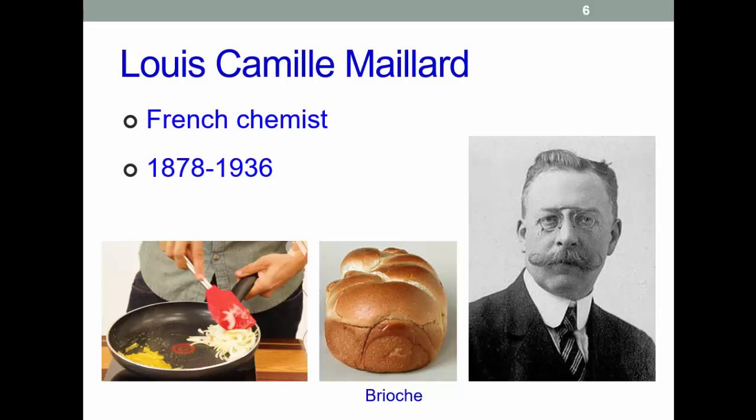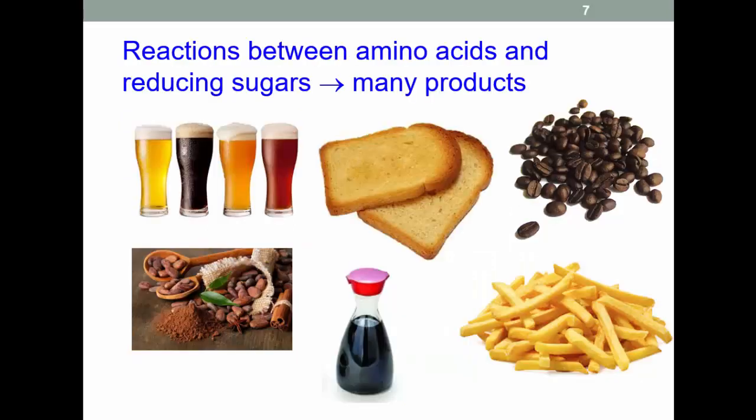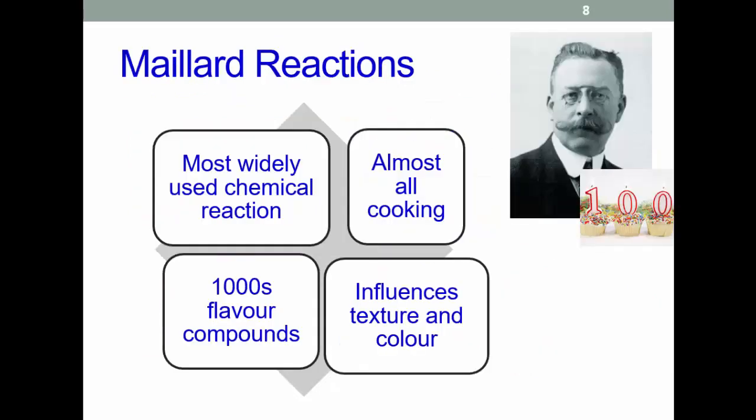You can try the experiment yourself with some onions in a pan and some bicarbonate of soda — sodium hydrogen carbonate. There's a picture of a brioche there in tribute to Louis. Maillard reactions are important in cooking; they give complex, attractive flavor and color to a wide range of foods. Examples include beers, toasted breads, cocoa or coffee beans, crisps and chips, soy sauce, and many others. Outside of biochemistry reactions in our bodies, it is possibly the most widely used chemical reaction performed by human beings.